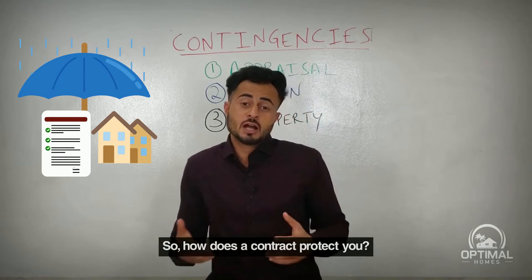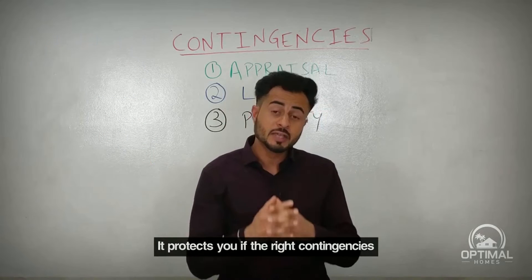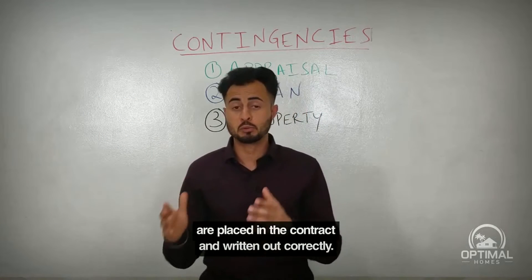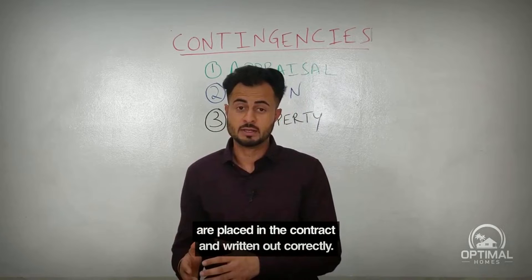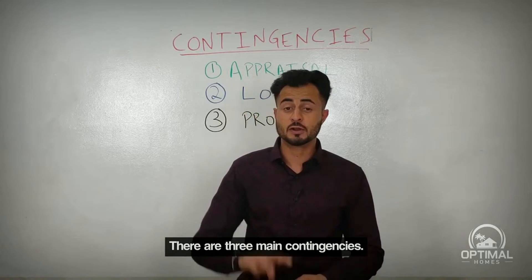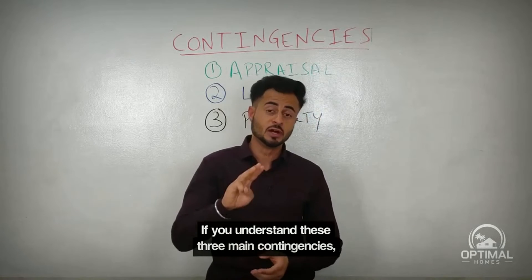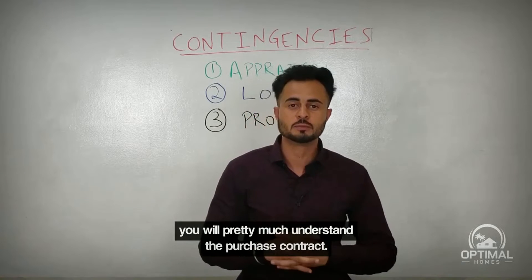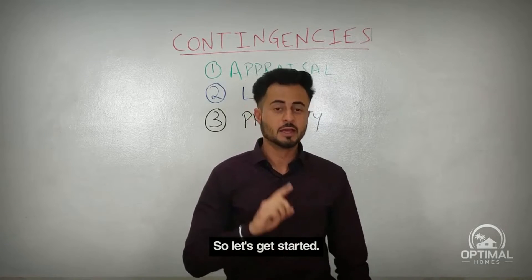How does the contract protect you? It protects you if the right contingencies are placed in the contract and written out correctly. So what are those contingencies? There are three main contingencies. If you understand these three main contingencies, you will pretty much understand the purchase contract.